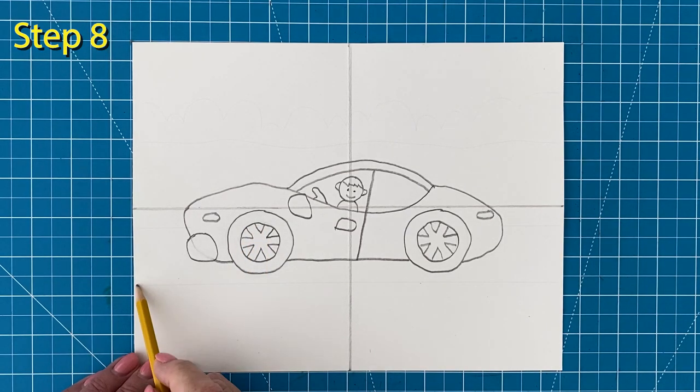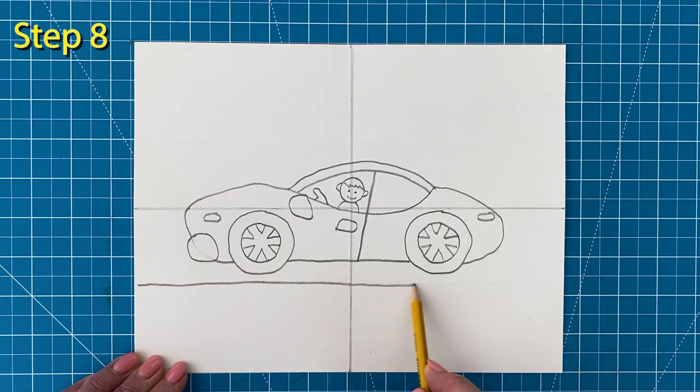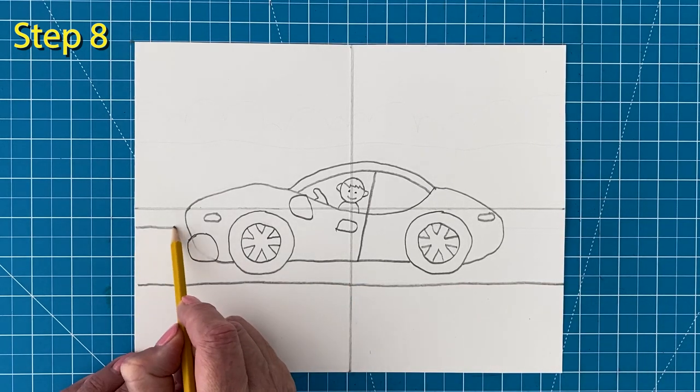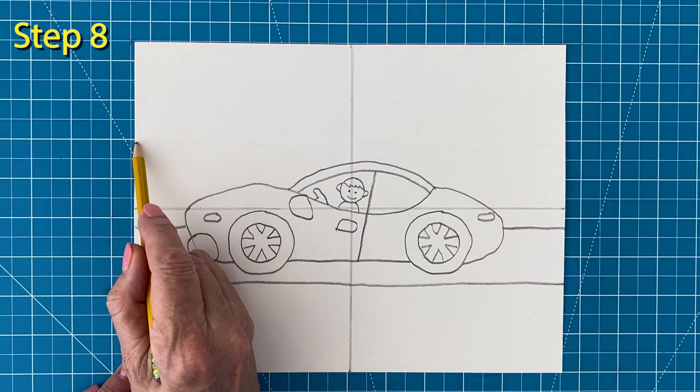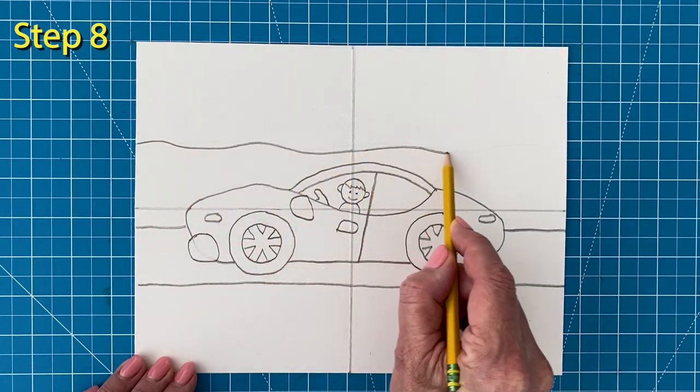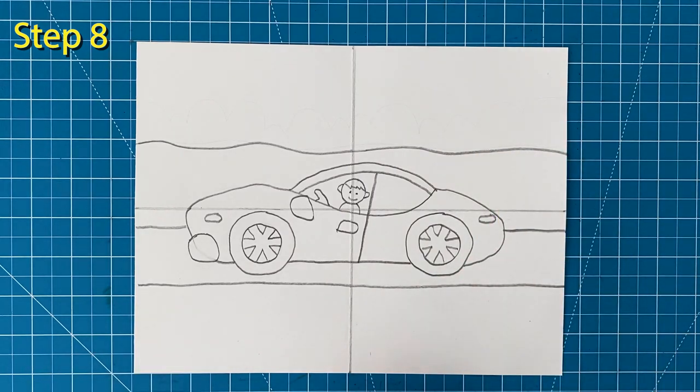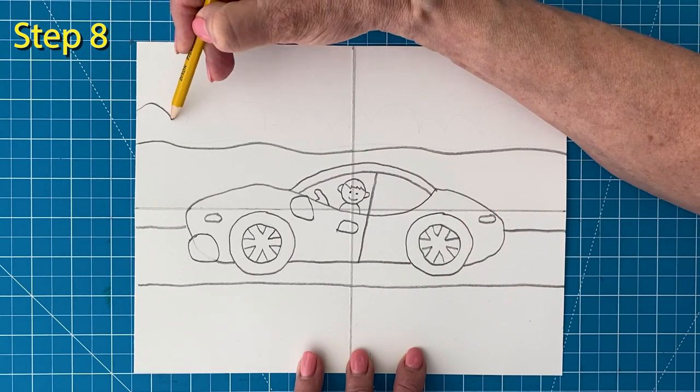Step number eight. Draw a horizontal line below for the bottom of the road, and one for the top. Add a wavy line above for the top of the grass. And then add a scalloped line for the bushes.